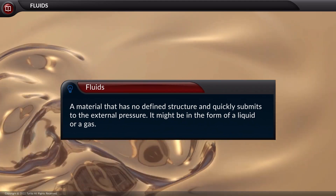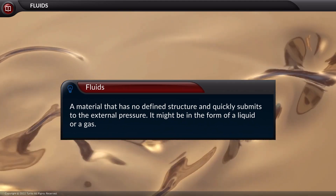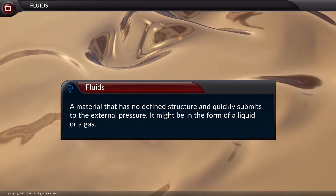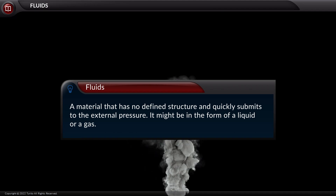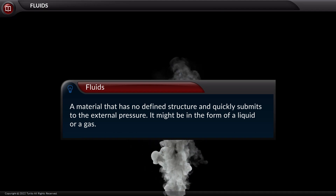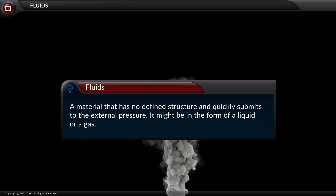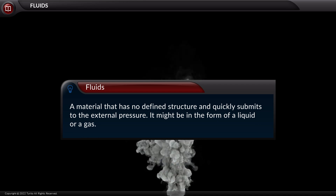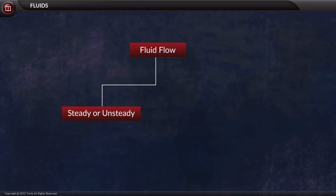The term fluid refers to a material that has no defined structure and quickly submits to external pressure. It might be in the form of a liquid or a gas. Now that we are clear about what a fluid is, let's look at the forms of fluid flow: steady or unsteady, viscous or non-viscous.